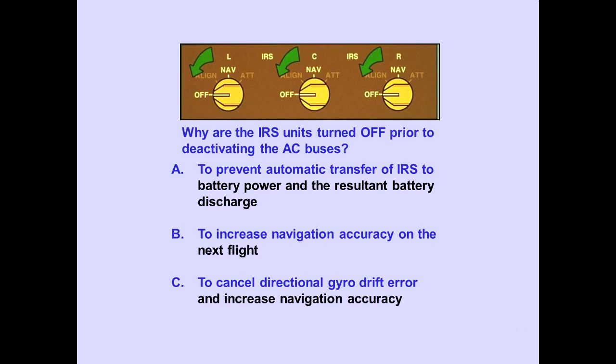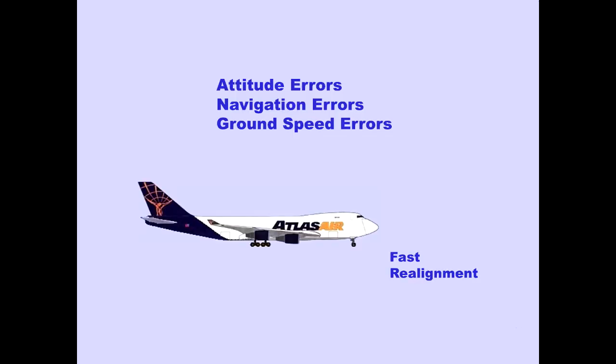Question. Answer A is correct. To remove the accumulated IRS attitude, navigation, and ground speed errors, a fast realignment mode is available. This mode is available only when the airplane is parked.